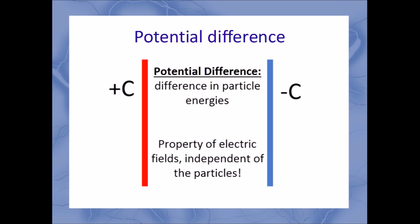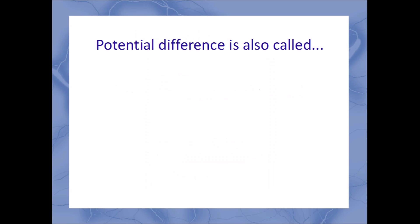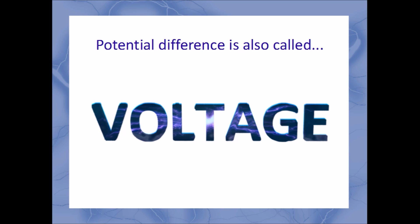Now for the really cool part: you don't need any particles at all to have a potential. In fact, the potential difference exists in any place where there's a difference of charge. These two rods have opposite charges, and the whole area between them has a potential difference. You can measure electric potentials in that area without directly measuring any particles — it is simply a property of the electric field between the rods. The term potential difference is a bit clunky, so we're going to use a better word: voltage.